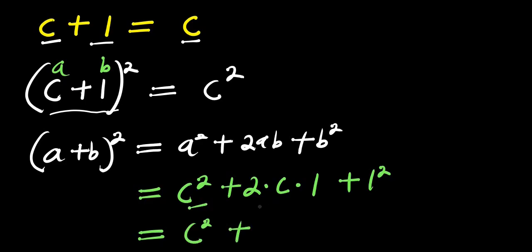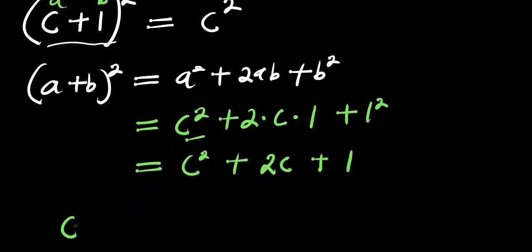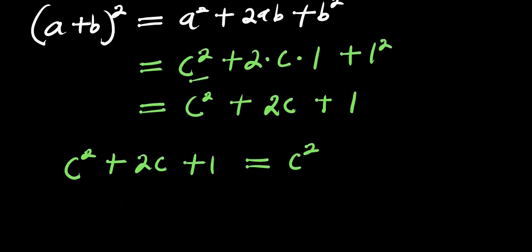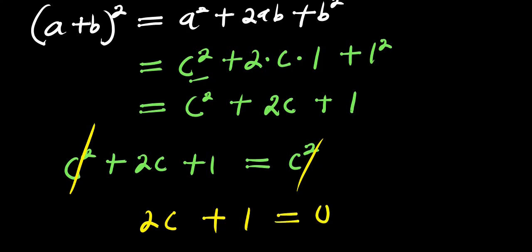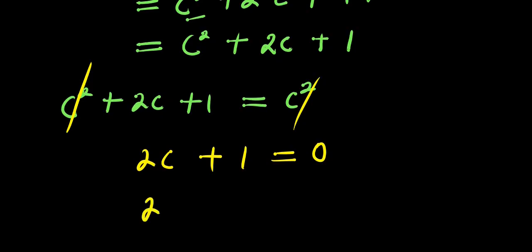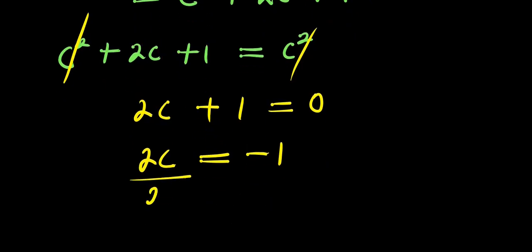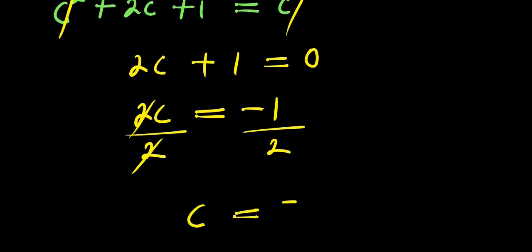This gives us c² + 2c + 1 = c². We can eliminate c² from both sides, leaving 2c + 1 = 0, so 2c = -1. Dividing both sides by 2, we get c = -1/2.